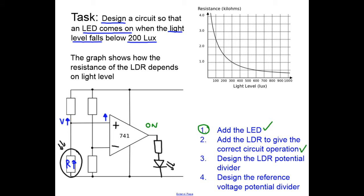The next thing we need to do is design the LDR potential divider. So we need to go to the graph. The specification says 200 lux, so at 200 lux we go across and find that the LDR has a resistance of 1.5 kiloohms. So I'll write that on—it's 1.5 kiloohms.